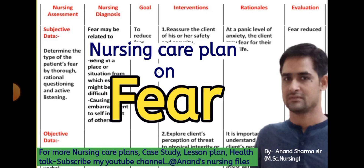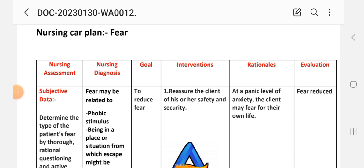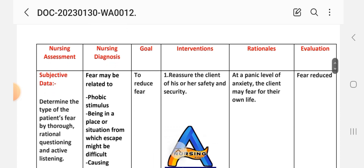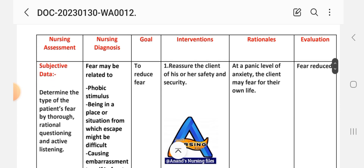The nursing care plan on fear comes from different nursing process steps, which include nursing assessment, nursing diagnosis, goal, intervention, and evaluation steps. In the nursing assessment, the objective is to determine the type of the patient's fear.